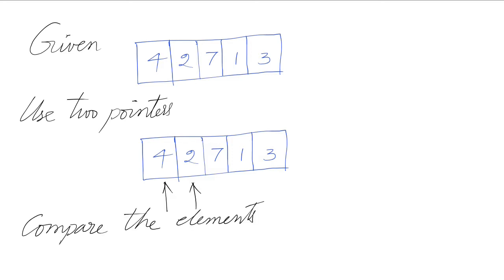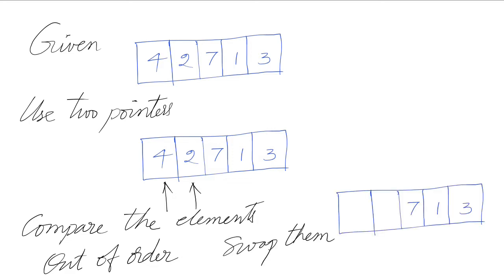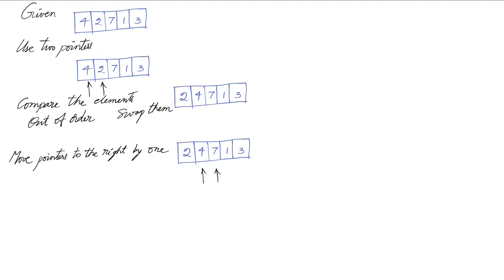We compare these two elements — they are out of order. Four is greater than two, so we need to swap them: move four to the right and two to the left. We now have [2, 4, 7, 1, 3].